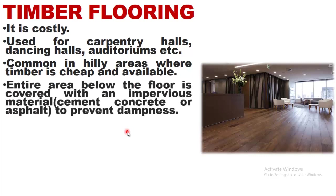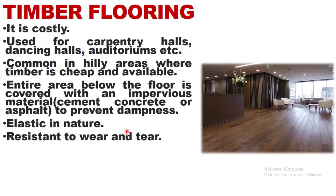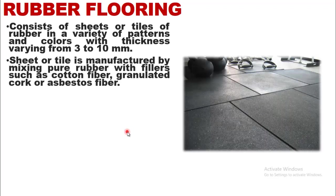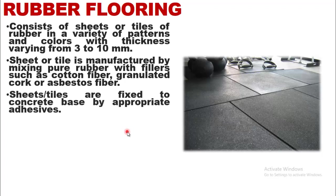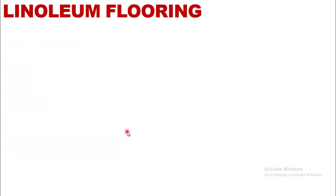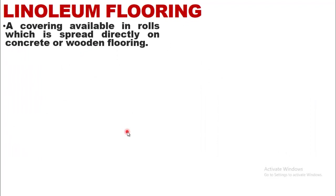For timber flooring, the entire area below the floor is covered with an impervious material such as cement concrete or asphalt to prevent dampness. It is elastic in nature and resistant to wear and tear. Rubber flooring consists of sheets or tiles of rubber in a variety of patterns and colors, with thickness varying from 3 to 10 mm. Sheets are manufactured by mixing pure rubber with fillers such as cotton fiber, granulated cork, or asbestos fiber, and are fixed to the concrete base by appropriate adhesives. Rubber flooring is resilient and noise-proof but costly, and is used in offices and public buildings.